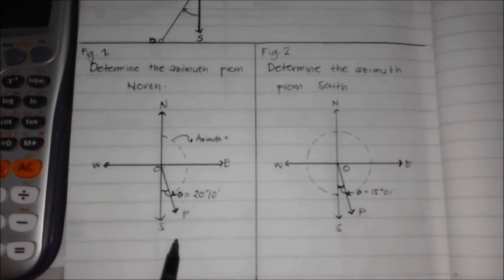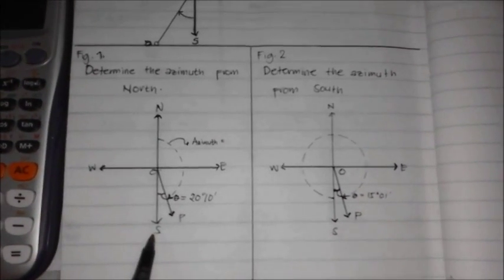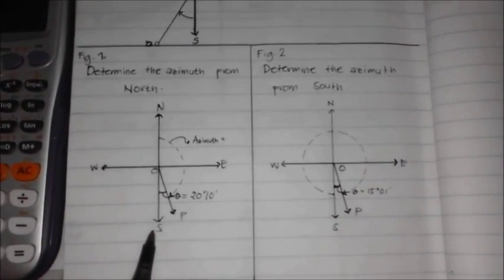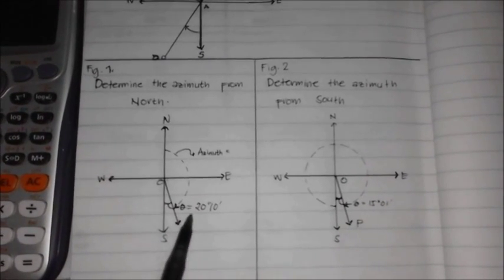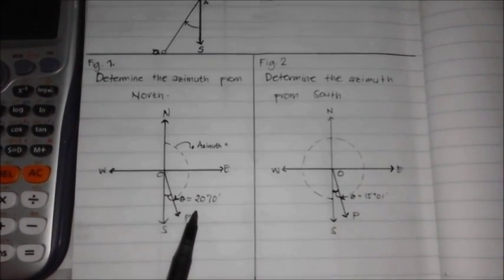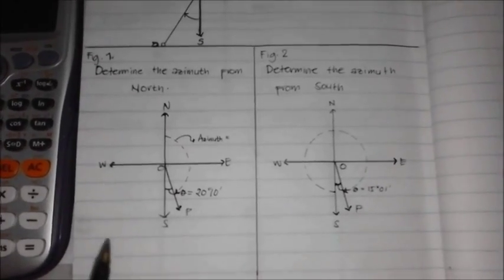We all know that the angle from the north to south is 180 degrees. And we have already the value of angle in the line OP, which is 20 degrees and 10 minutes. Using a scientific calculator, we will subtract 20 degrees and 10 minutes from 180 degrees.